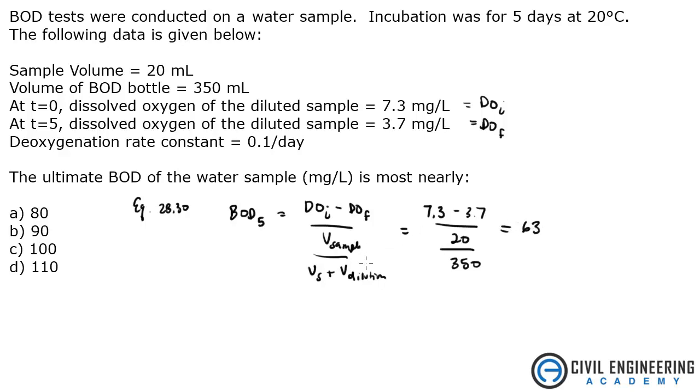There's another equation to use to solve for ultimate BOD, which is what we're asked to find. If you look at equation 28.32, it states that if your deoxygenation rate is 0.1 per day, the ultimate BOD can be approximated from this equation. It states that the BODU, the ultimate BOD, is basically equal to 1.463 times the 5-day BOD.